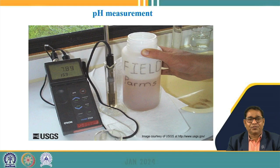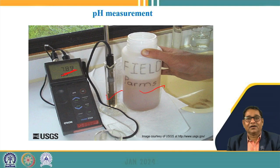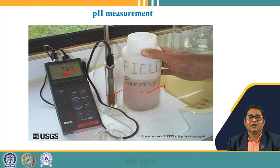pH measurement is done using a pH electrode dipped into the water sample. The reading — for example, 7.89 — is displayed on the pH meter, indicating a slightly alkaline wastewater. The electrode analyzes the H⁺ ions and accordingly the pH reading is displayed.